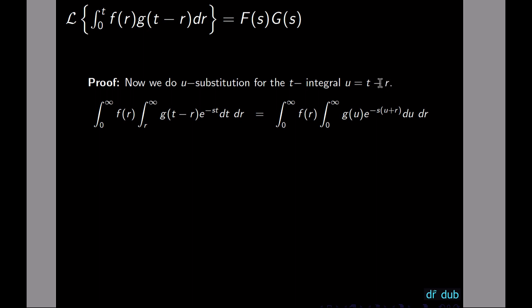The bounds change as well: plugging in t equals r gives u equals 0, so the new lower bound is 0. Plugging in t equals infinity, infinity minus a constant is still infinity. So the bounds for u are 0 to infinity.